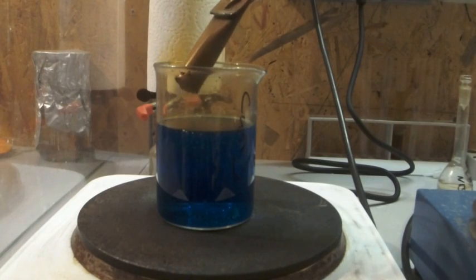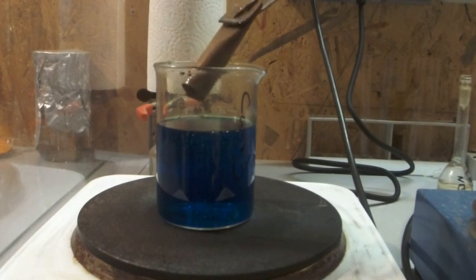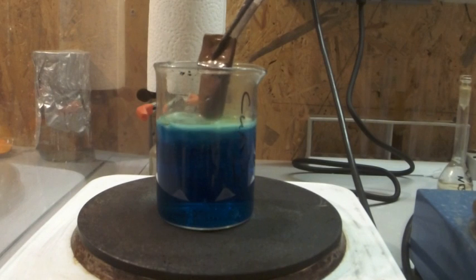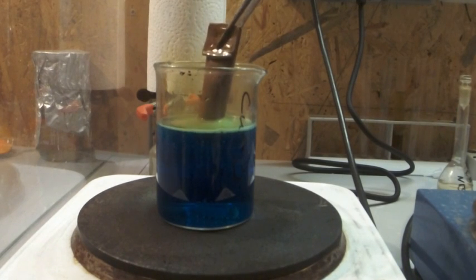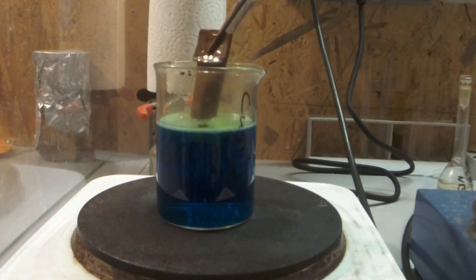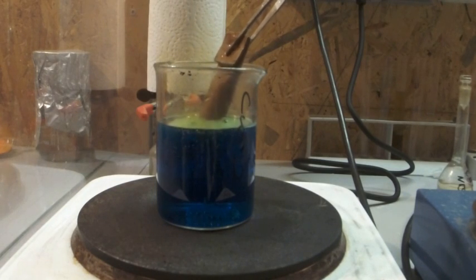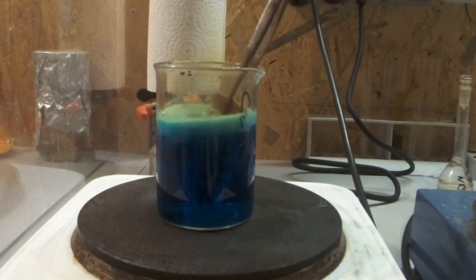But to show you the other method as well, I dissolved some copper in the still strongly acidic copper nitrate solution from the last step. As you can clearly see, brown nitrogen oxides are forming which decreases the yield based on the nitric acid.